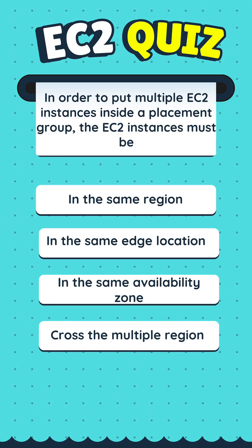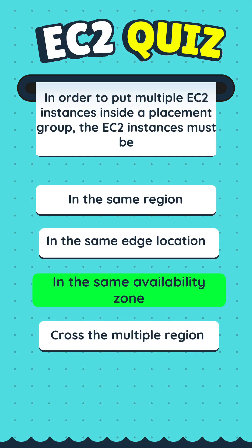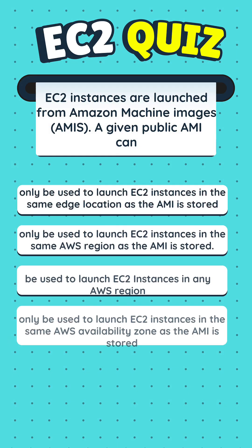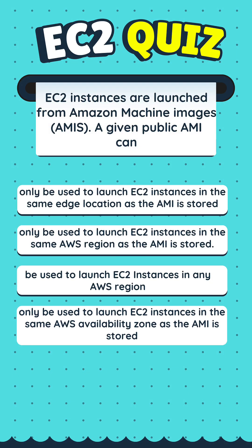In order to put multiple EC2 instances inside a placement group, the EC2 instances must be... Times up. The correct answer is C. EC2 instances are launched from Amazon Machine Images, AMIs.